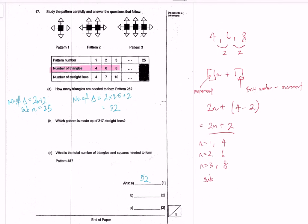Now part B, what pattern is made up of 217 straight lines? So now they're asking for straight lines. Let's practice that again. You have your pattern which is 4, 7, 10.